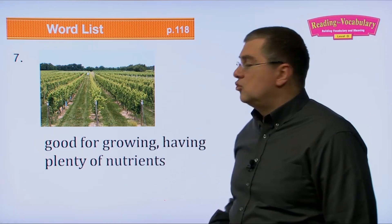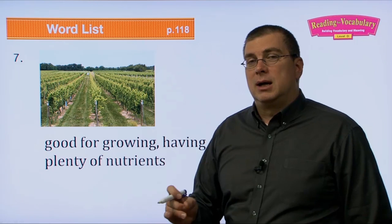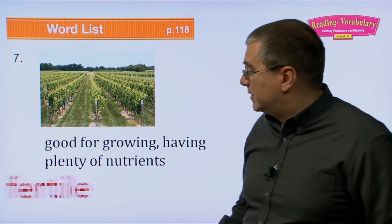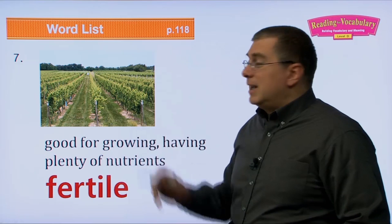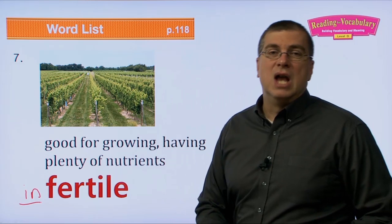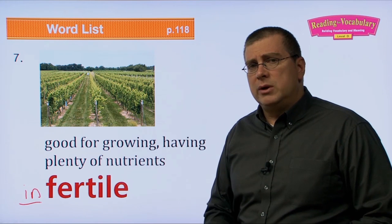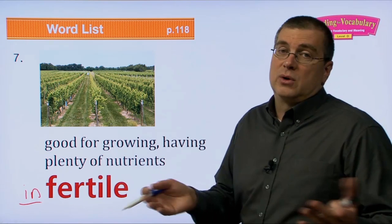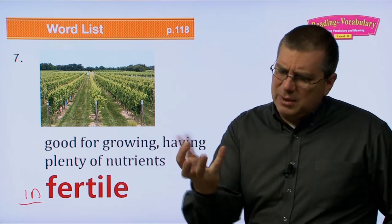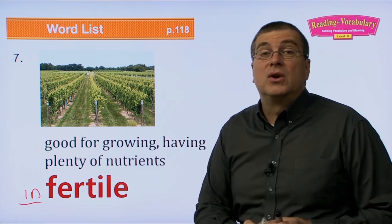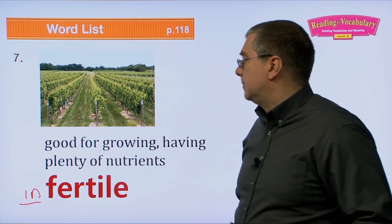Number seven: good for growing, having plenty of nutrients — that's fertile. If the land is good for growing and has lots of nutrients in the soil, the land is fertile. If it's not fertile, we say it's infertile — 'in' means not. The desert is infertile; you can't grow plants there because there aren't enough nutrients or water. Good, rich, dark brown or black earth is fertile soil — it has lots of nutrients and is good for growing crops.